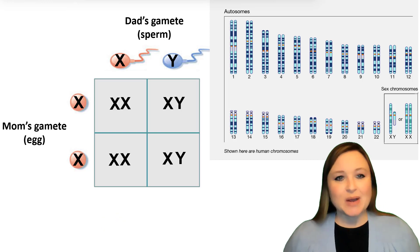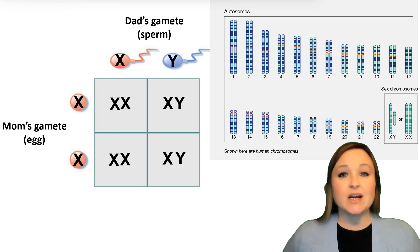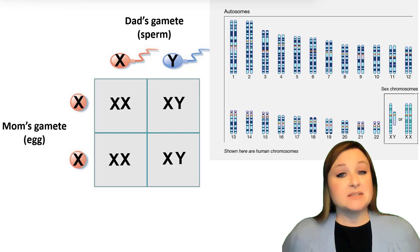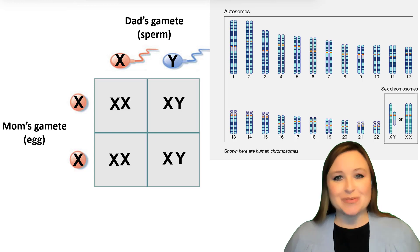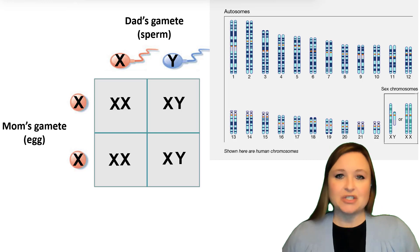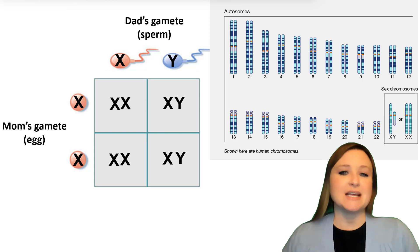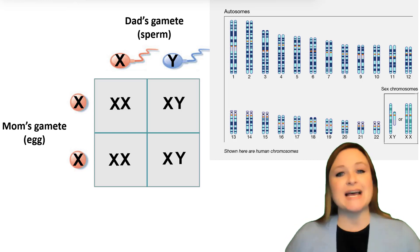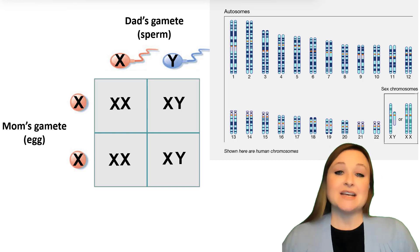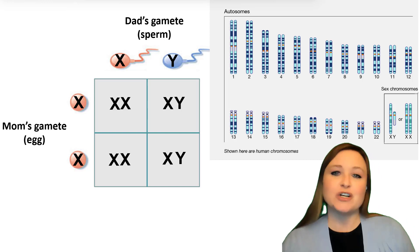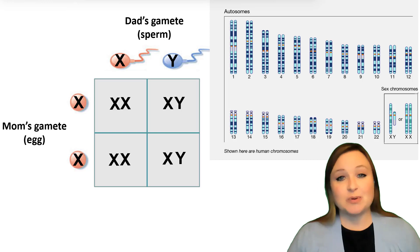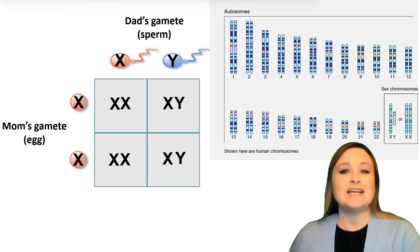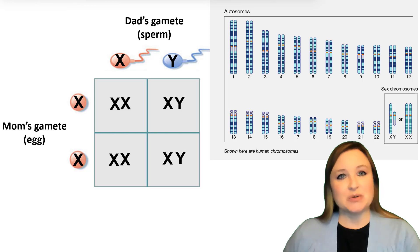Now one thing you might have taken away from this Punnett square is that it's actually dad that determines the sex of the child, because mom can only pass along X chromosomes. It's dad that determines the sex of the child because in the sperm, the sperm is going to have either dad's X chromosome or dad's Y chromosome. If a sperm carrying an X chromosome fertilizes an egg, the offspring is going to be female. But if the sperm carrying the Y chromosome fertilizes an egg, then the offspring is going to be male.